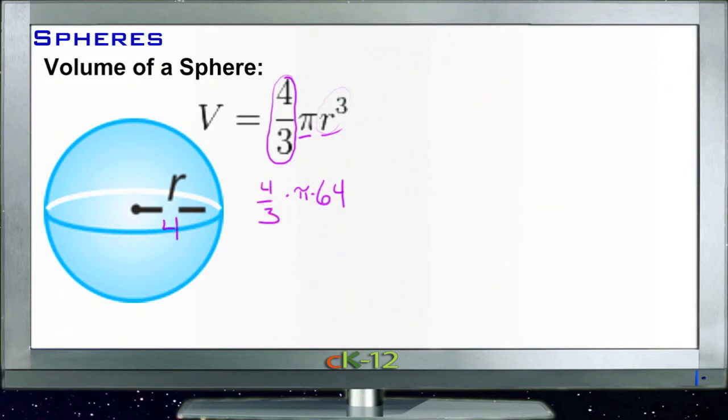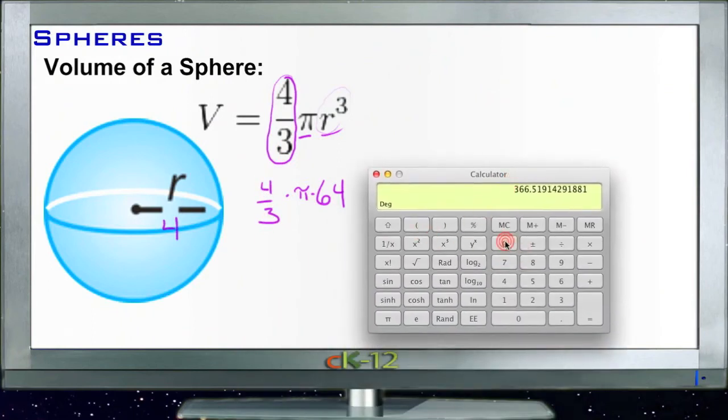Take your pick. So we just run that through a calculator and we get, well, 4 thirds is 1.33333, 1 and 1 third.